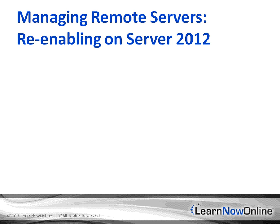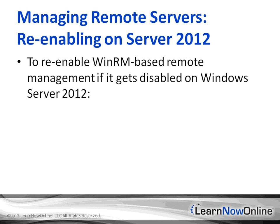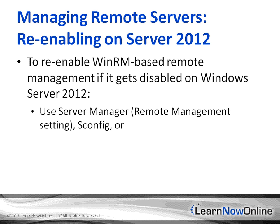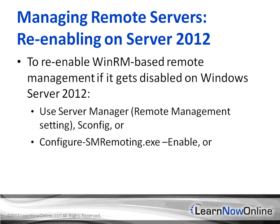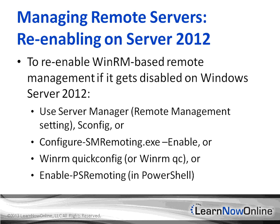One advantage of Windows Server 2012 is that remote management is already enabled by default. But if it gets disabled, you can re-enable it — and you need to know this for the exam. There are a few ways: use Server Manager and enable the remote management setting; use the SConfig utility; use the Configure-SMremoting.exe utility with the Enable option; use the WinRM utility with the QuickConfig or QC option; or in PowerShell, use the Enable-PSRemoting cmdlet.